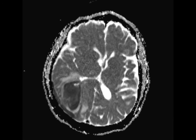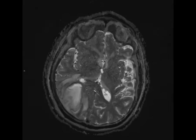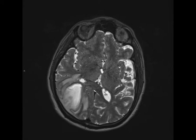On the diffusion-weighted images, there is a central region of diffusion restriction within the lesion with spillage of contents into the adjacent subdural space over the posterior right cerebral hemisphere. There is scattered susceptibility artifact along the margins of the lesion extending into the subdural space, with peripheral hyperemia on the perfusion-weighted images.